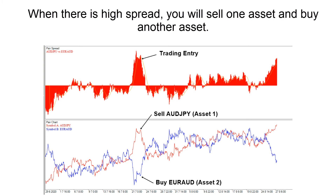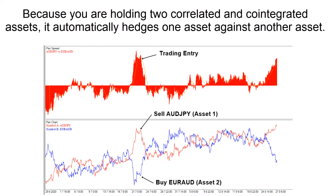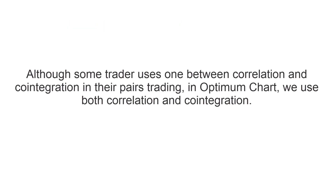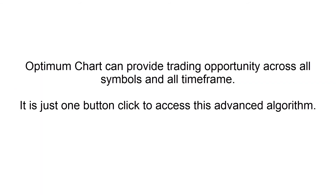When there is high spread, you will sell one asset and buy another asset. Because you are holding two correlated and co-integrated assets, it automatically hedges one asset against another. Hence, it provides risk-neutral trading. Although some traders use only one of correlation or co-integration, Optimum Chart uses both. Optimum Chart can provide trading opportunities across all symbols and all time frames in just one button click.